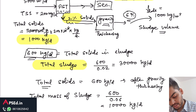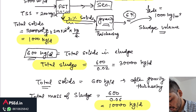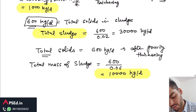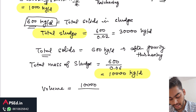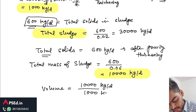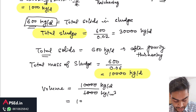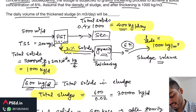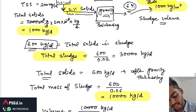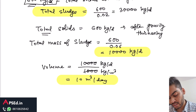After thickening, we have total sludge mass of 10,000 kg/day and density of 1000 kg/m³. Volume = mass / density = 10,000 kg/day ÷ 1000 kg/m³ = 10 cubic meters per day. This is the daily volume of thickened sludge in cubic meters per day, which is what the question asked for.